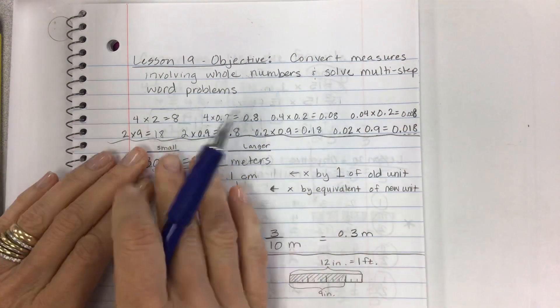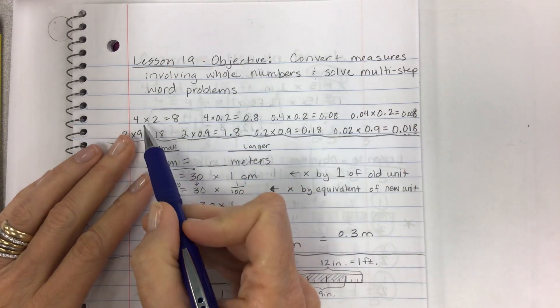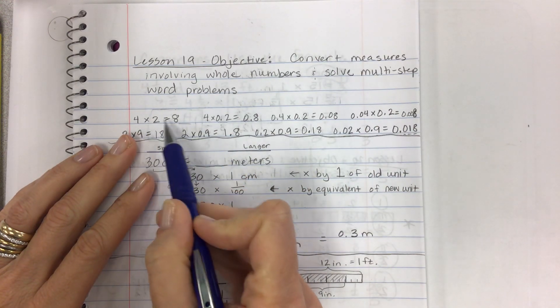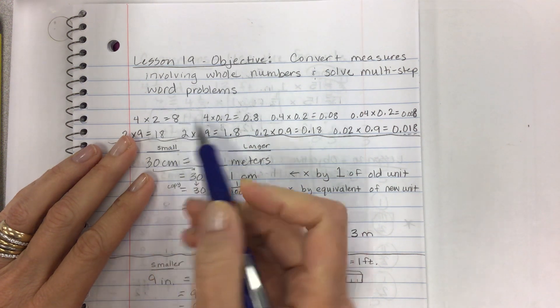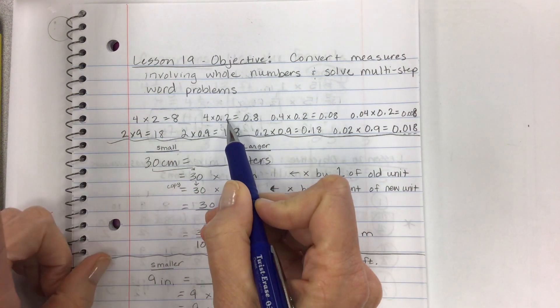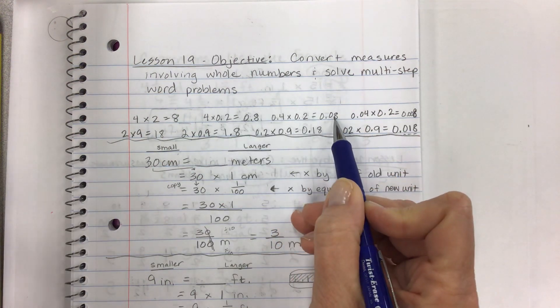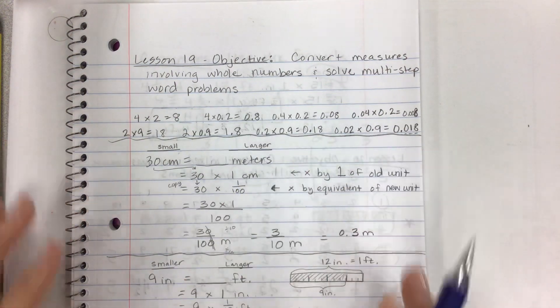We're going to be converting measures involving whole numbers and solving multi-step word problems. There's a little warm-up activity in the teacher's book. It's just recognizing if you have whole numbers and you multiply, you get like 4 times 2 is 8. But if it's 4 times 2 tenths, the answer is 8 tenths. 4 tenths times 2 tenths is 8 hundredths and so on. That's all that is there.